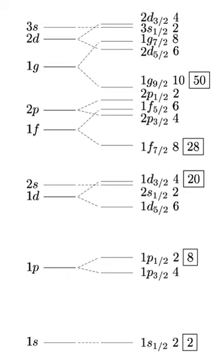The 5th shell has states with N=4, J=9/2. The 6th shell includes N=4 with J=1/2, 3/2, 5/2 or 7/2, plus N=5 with J=11/2.